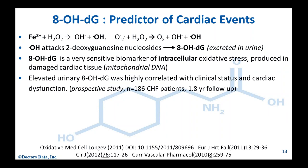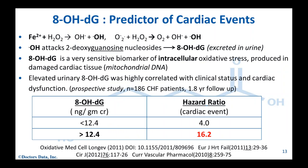8-hydroxy-DG is a very sensitive biomarker of intracellular oxidative stress — in this case produced in damaged cardiac tissue, specifically mitochondrial DNA. Elevated urinary 8-hydroxy-DG has been highly correlated with clinical status and cardiac dysfunction. In a prospective study of 186 chronic heart failure patients with a 1.8-year follow-up, patients with elevated 8-hydroxy-DG levels greater than 12.4 nanograms per gram had a significant four-fold increase in the hazard ratio for cardiac events. So 8-hydroxy-DG appears to be a good predictor of cardiac events.